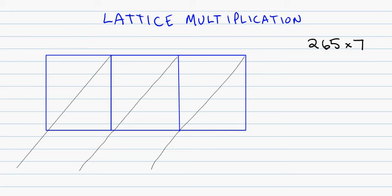Let's try that one more time with a 3-digit times a 1-digit, where we have 265, which we'll write on the top of our grid, times 7, which we'll write over here on the right side.